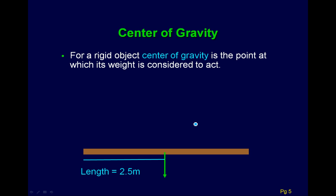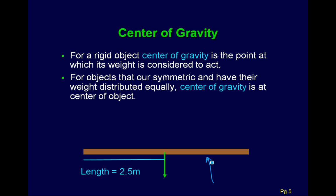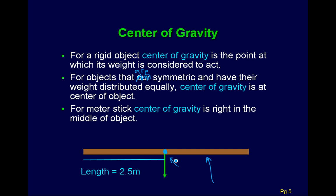And the final thing before we solve some problems is this concept of center of gravity. So for a rigid body, like I have a little picture of a beam here, the center of gravity is the point at which the weight is considered to act. Now for objects that are symmetric and have their weight distributed equally, the center of gravity is at the center of the object. And you can think of all of the mass as acting at this point right here. And that will simplify things and make things much easier. But it is a little bit tricky when you first get started thinking about that.